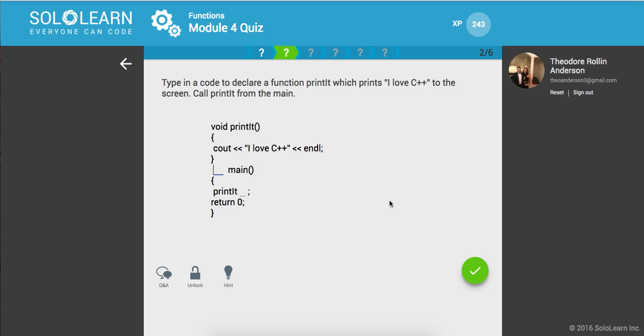Type in a code to declare a function printit which prints I love C++ to the screen. Okay, so here we have int main, it's gonna call printit, and we're going to invoke this function and it's going to return zero. Awesome.